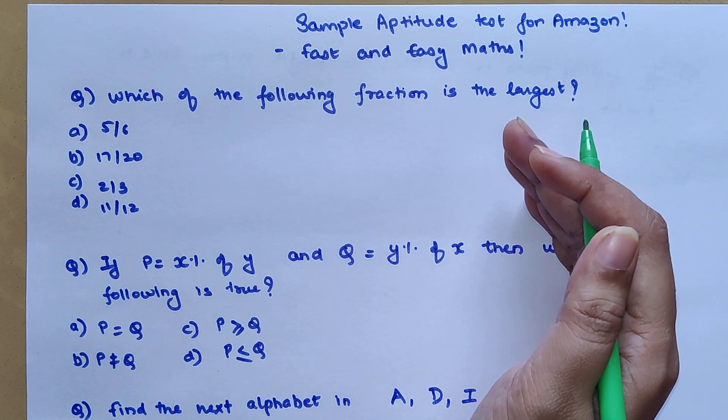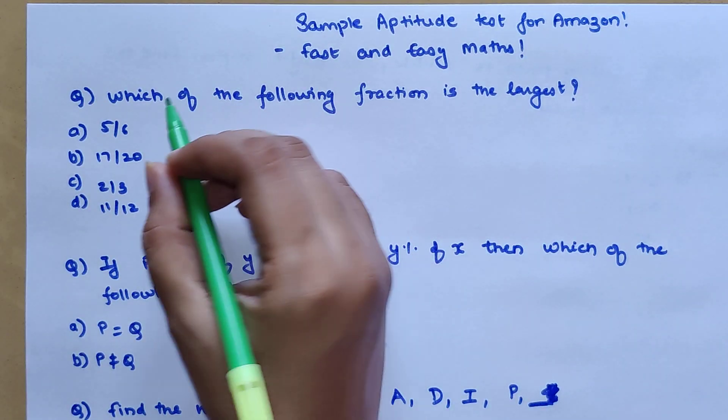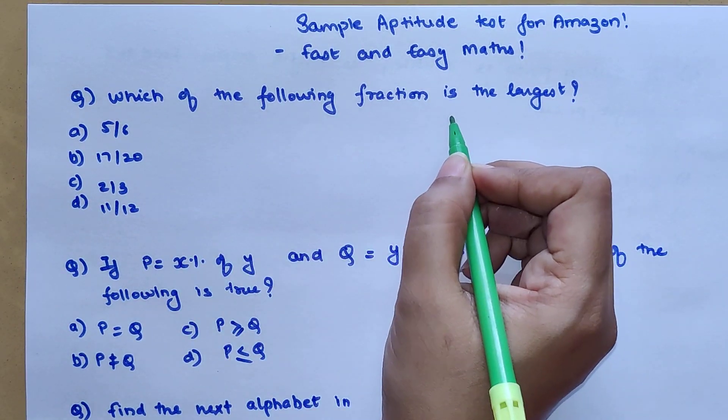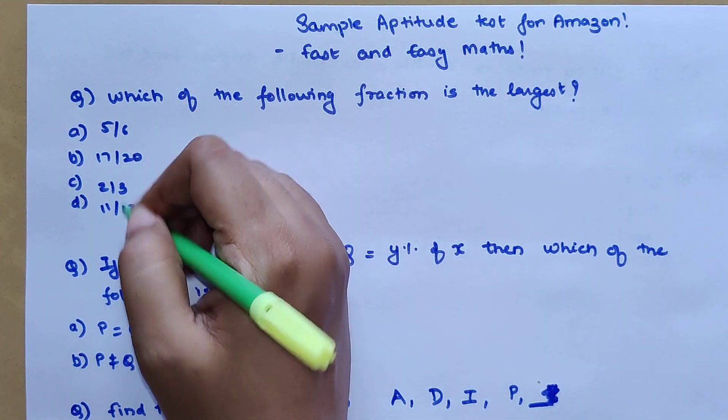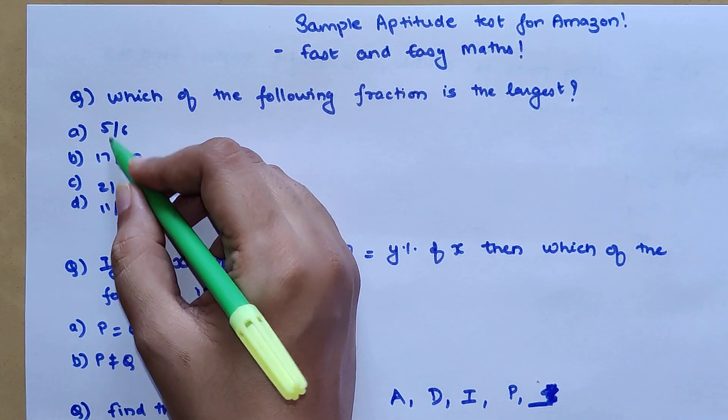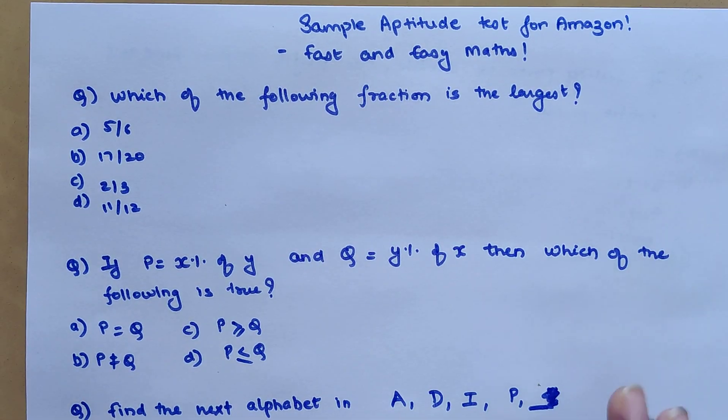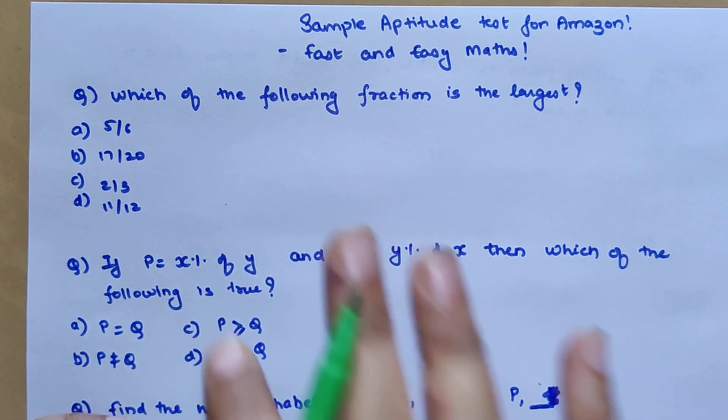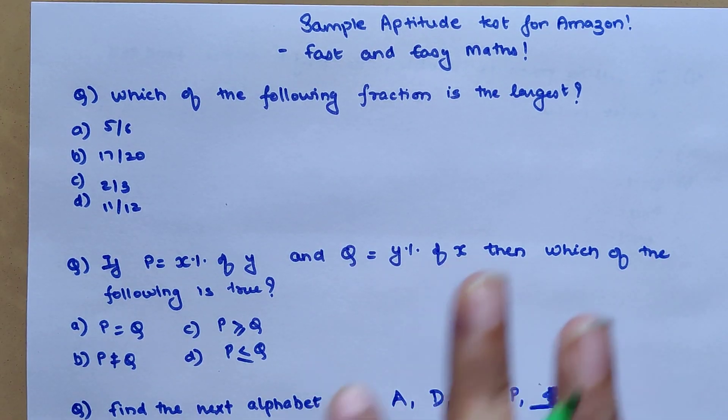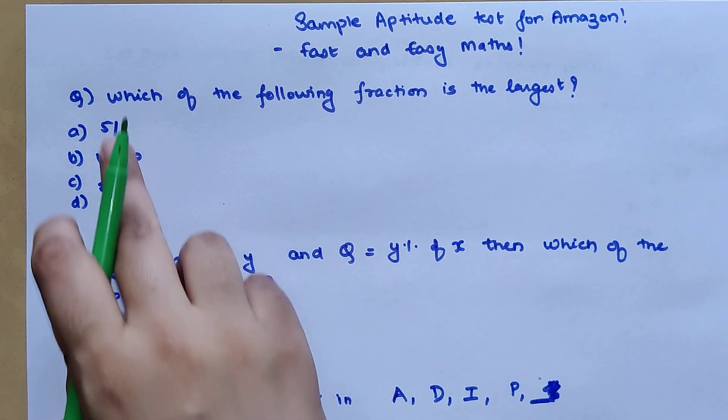Let's begin with the first question: which of the following fraction is the largest? In this case we have four different fractions and all of them have very different denominators. Here I would suggest that instead of dividing and finding the answers in decimal, what you should do is take LCM of all of the denominators.